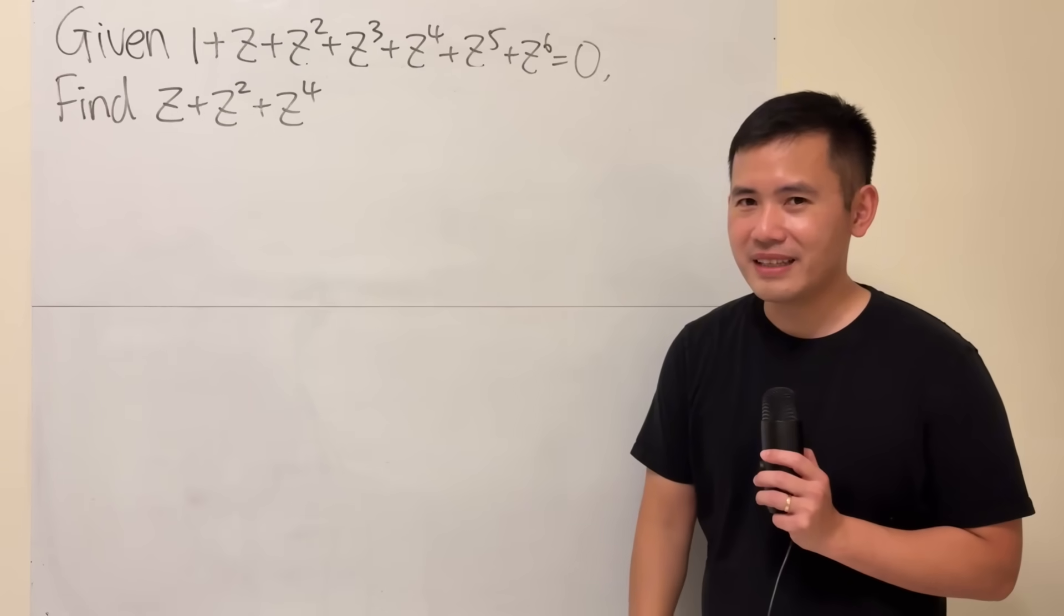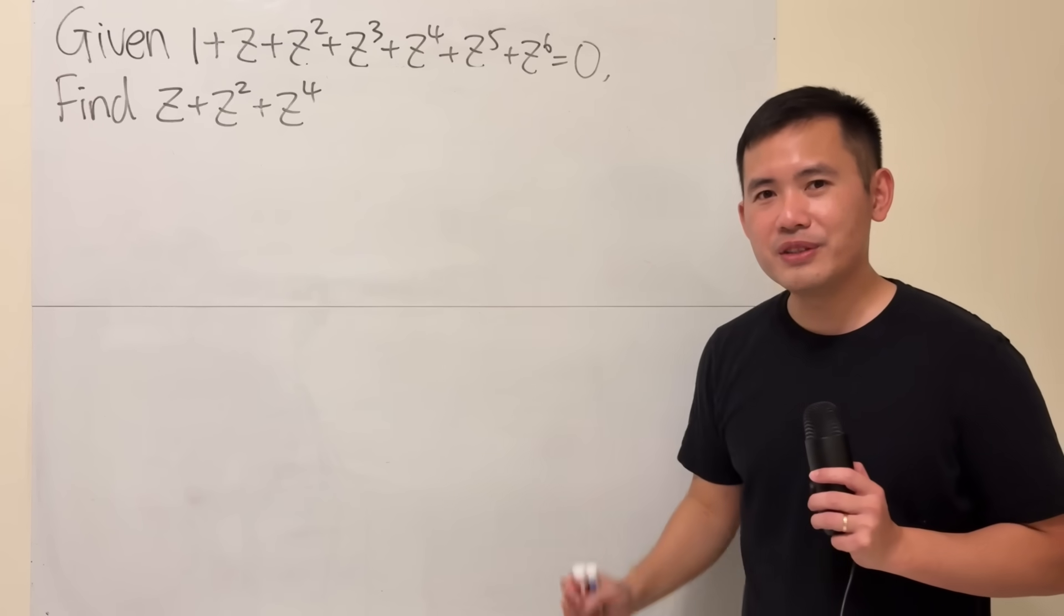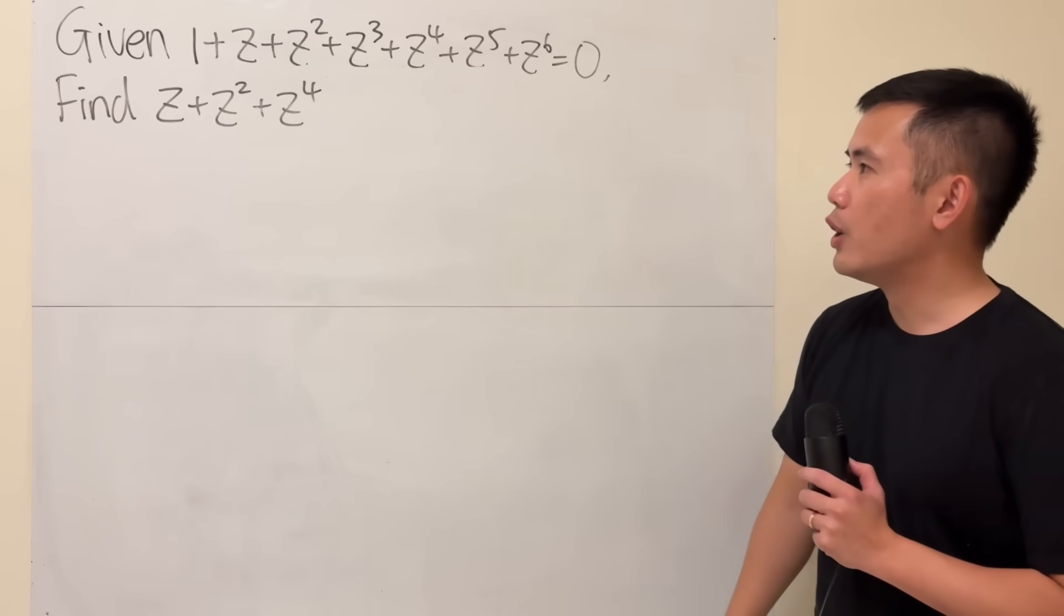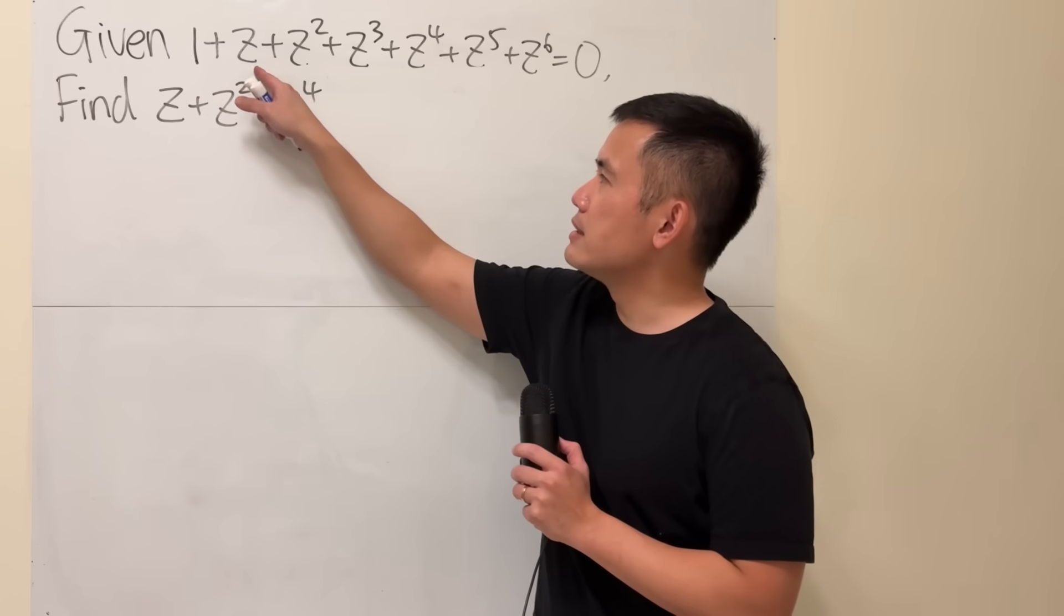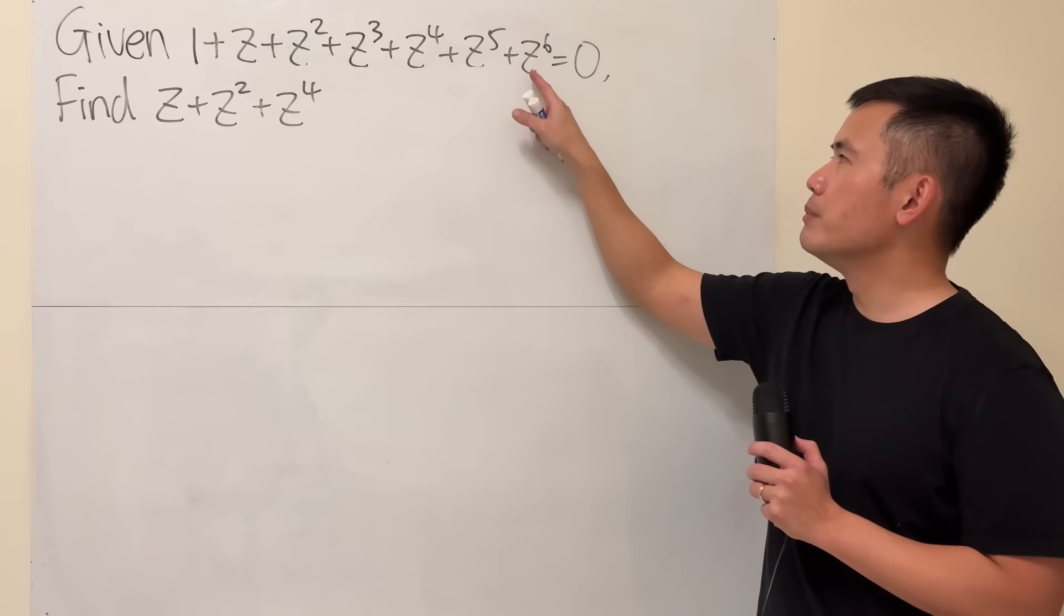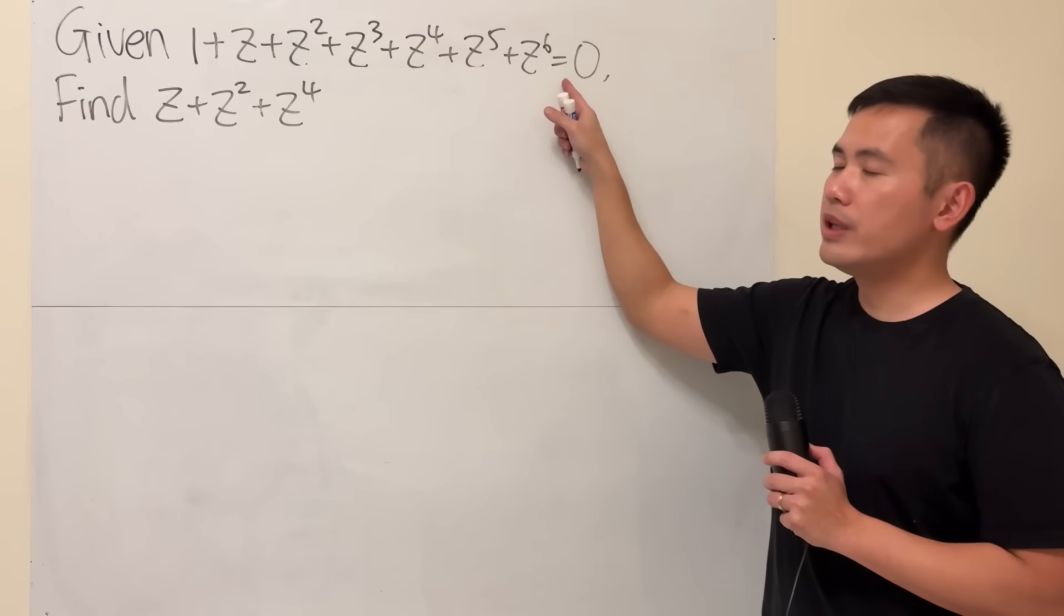Okay, let's do some math for fun. Here I have this very challenging algebra question for you guys. We are given that 1 plus z plus z squared all the way up to plus z to the sixth power equals zero.